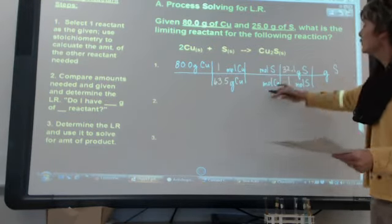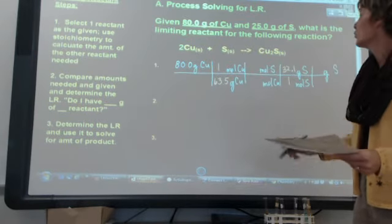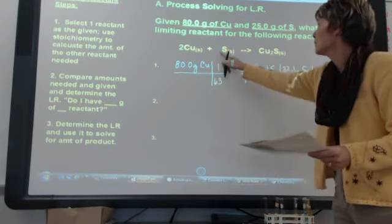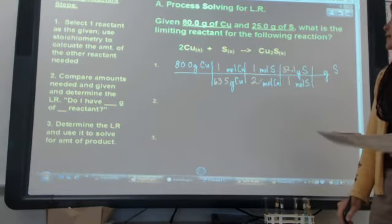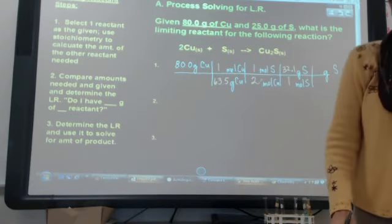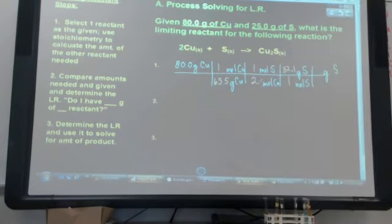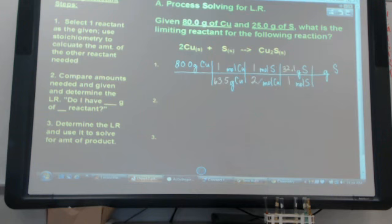And as I look at my balanced chemical equation, I can see my mole ratio is one mole of sulfur to two moles of copper. Now I am going to pause this for a minute because we need to plug and chug that into our calculator and see what we get for an answer.